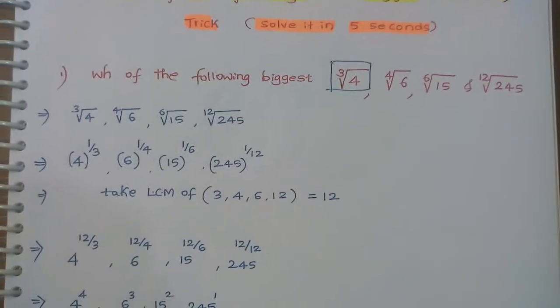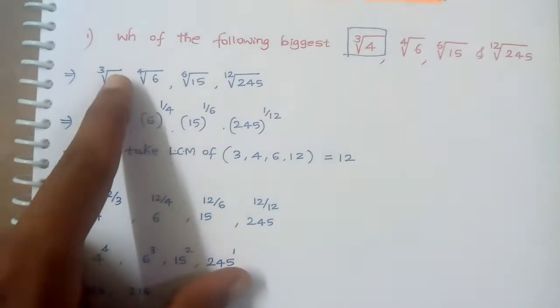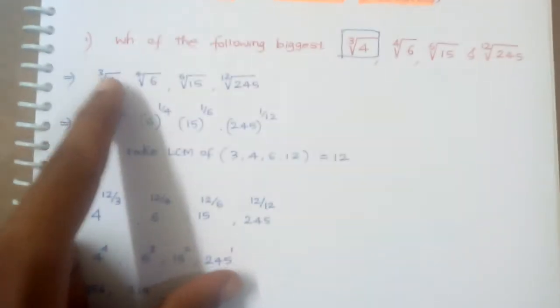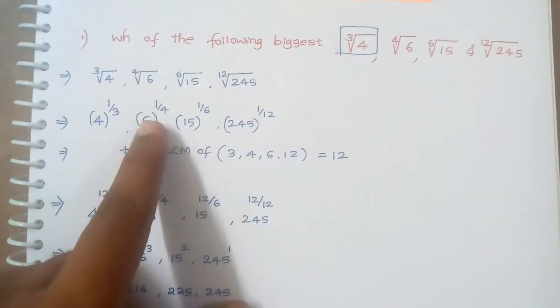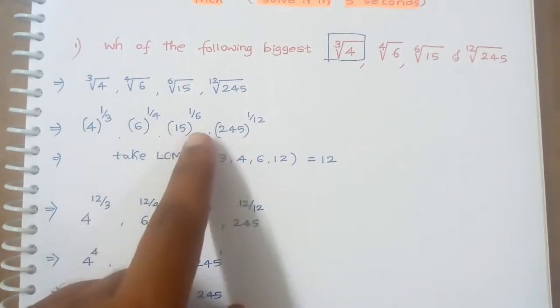For this type of question, first we have to convert them. We can write cube root of 4 as 4 raised to 1 by 3, then 6 raised to 1 by 4, 15 raised to 1 by 6, 245 raised to 1 by 12.